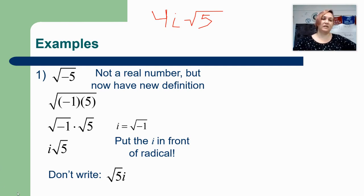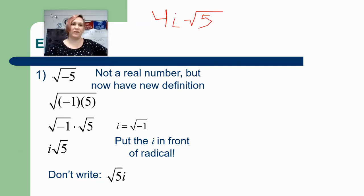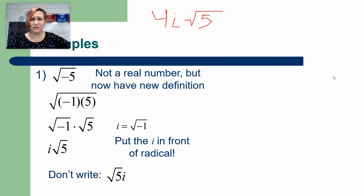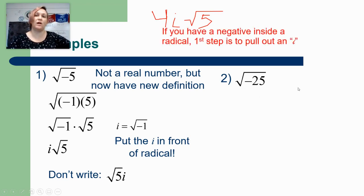Now this again is technically how we do it but we're not going to write that many steps. So in reality what you're going to do is just anytime you see a negative underneath the square root symbol, your very first step, first thing you're going to do is you're going to pop that negative out and change it into a letter i.